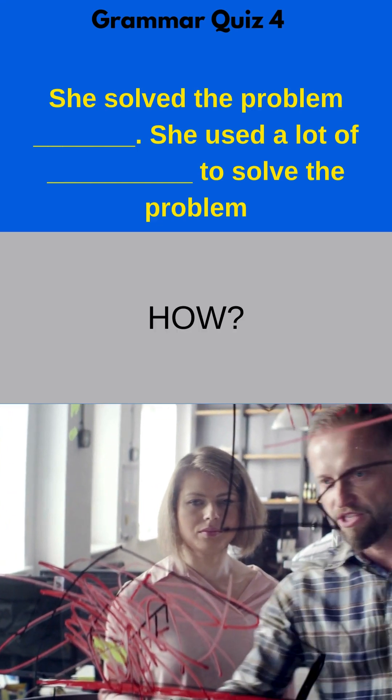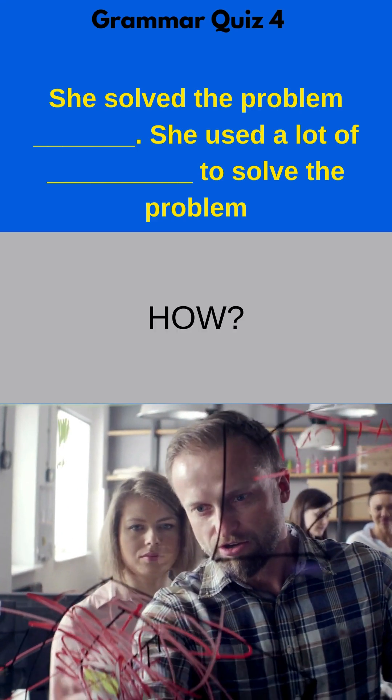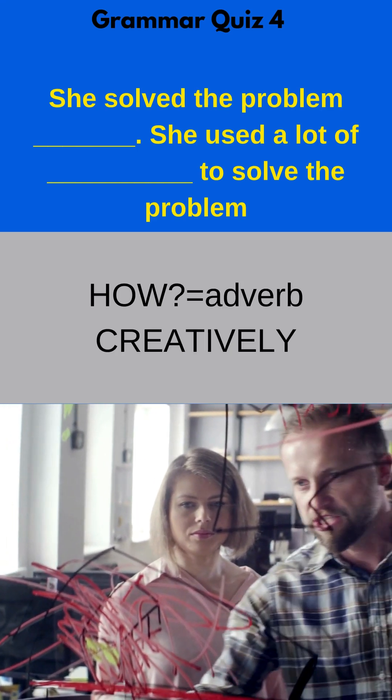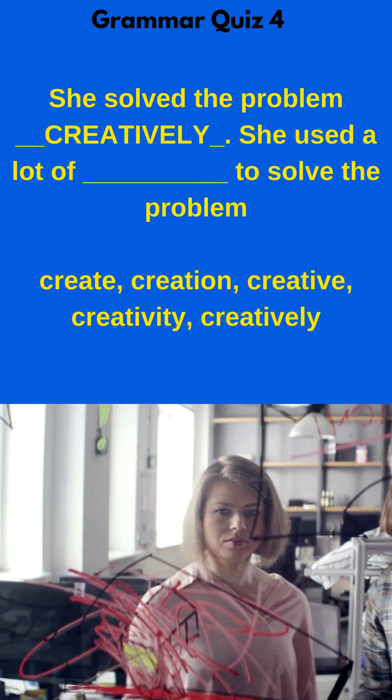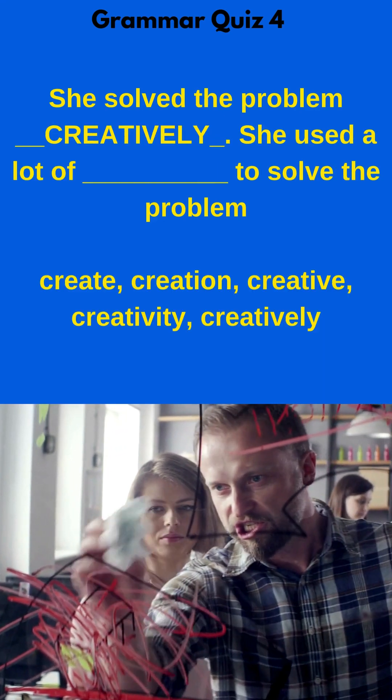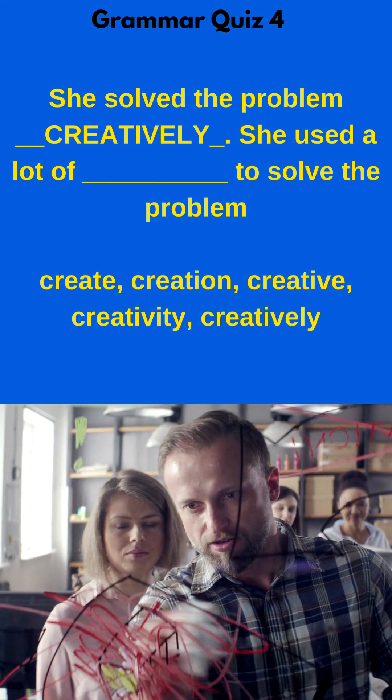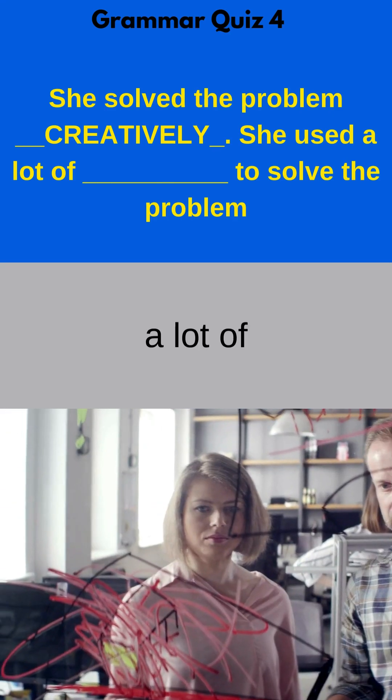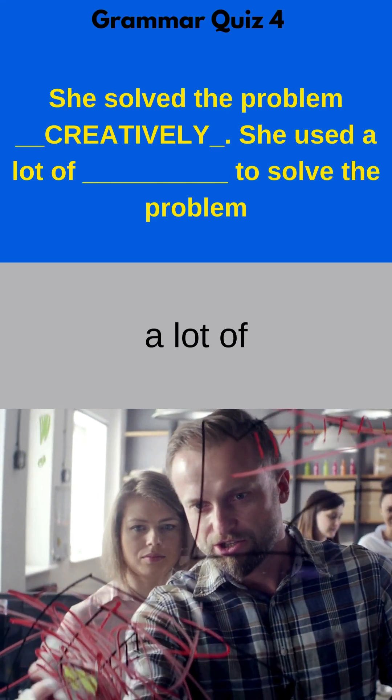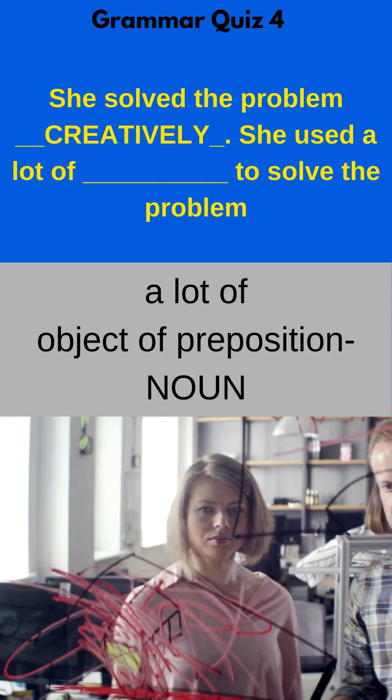How did you solve the problem? If it answers the question 'how,' then you need the adverb. For the second part of the sentence, for the second sentence, 'she used a lot of blank to solve the problem.' In that case, you see the expression 'a lot of.' Of is a preposition. The object of a preposition is going to be a noun.